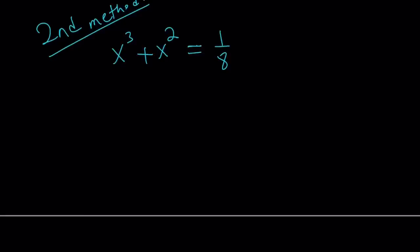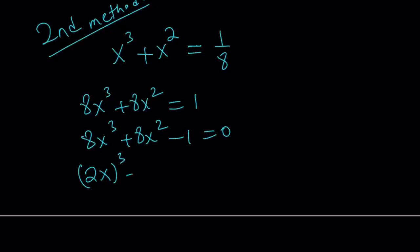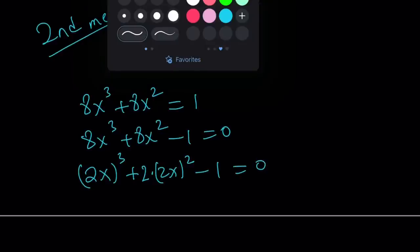So here's what we're going to do. Multiply both sides by 8. And so our equation looks a little better. No fractions. Put everything on the same side. Great. Now, notice that 8x cubed is a perfect cube. So I can write it as 2x cubed. And 8x squared, we can write this as 2x squared, but that gives us 4x squared. So I've got to multiply it by 2. Minus 1 equals 0.